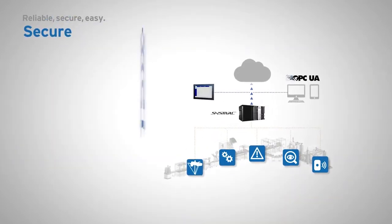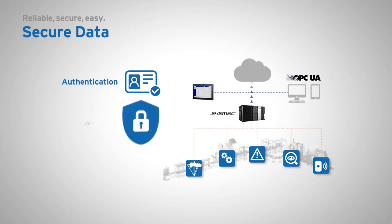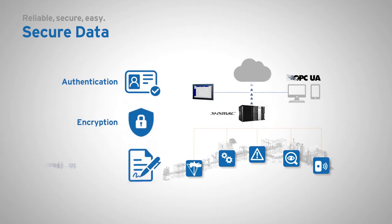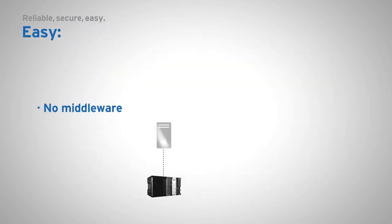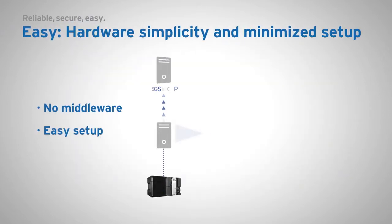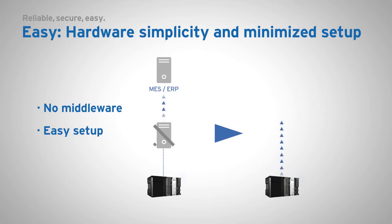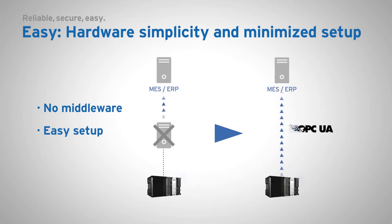It ensures secure exchange of information by providing access control, authentication and encryption. OPC UA eliminates the need for hardware middleware by directly connecting the controller variables to the host system. It simplifies the complete setup.